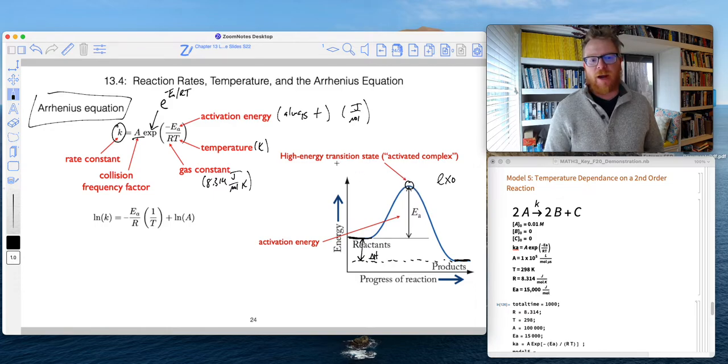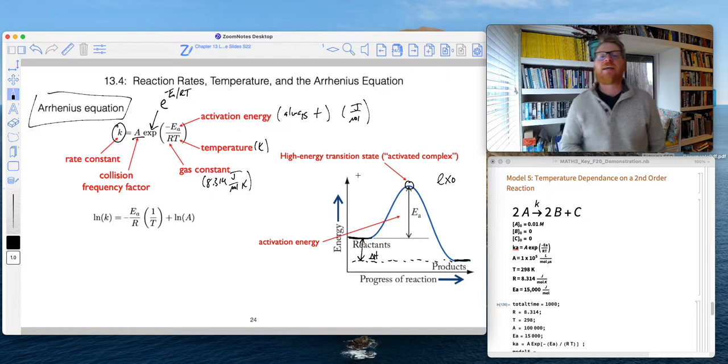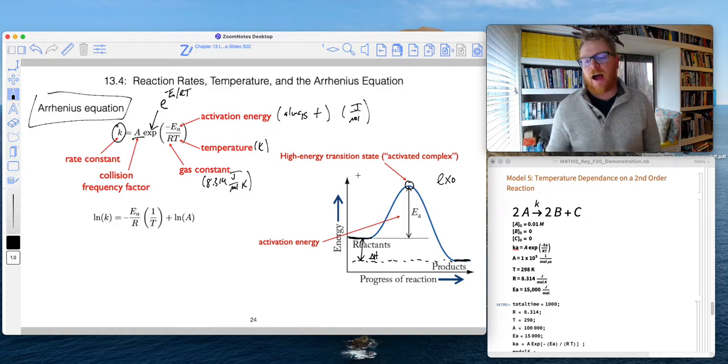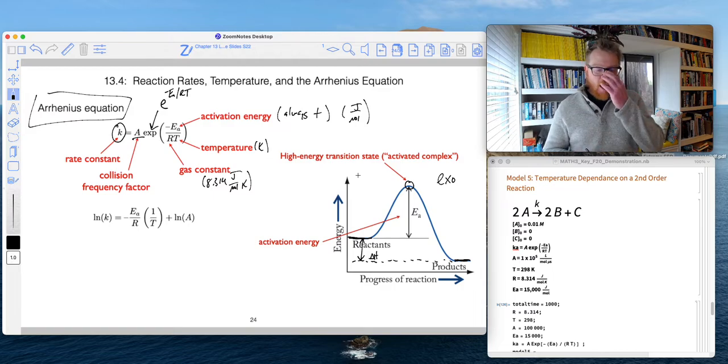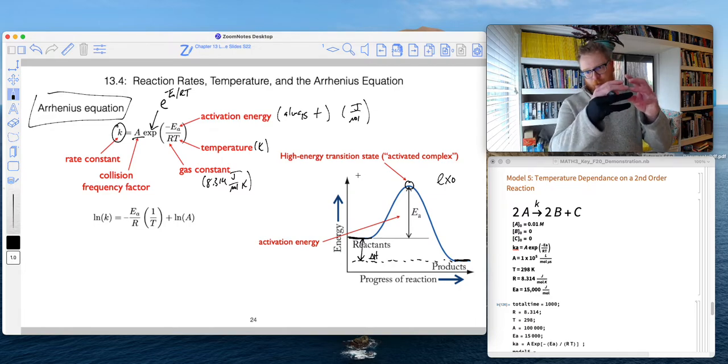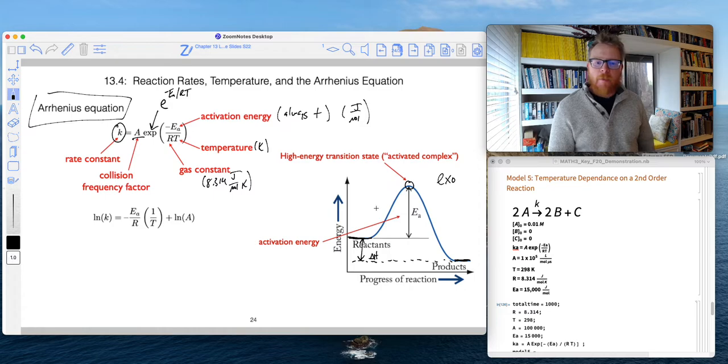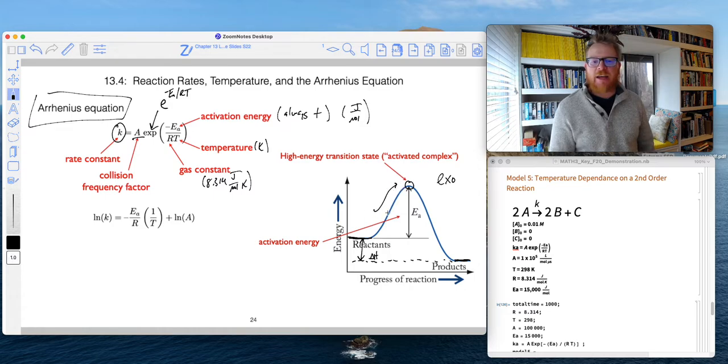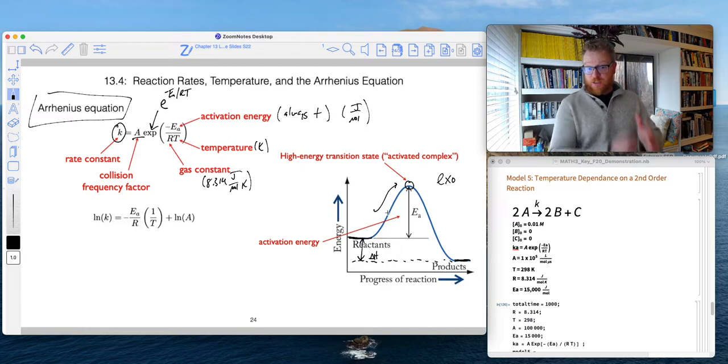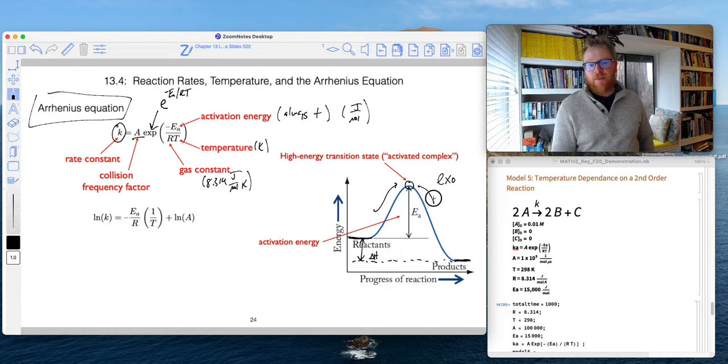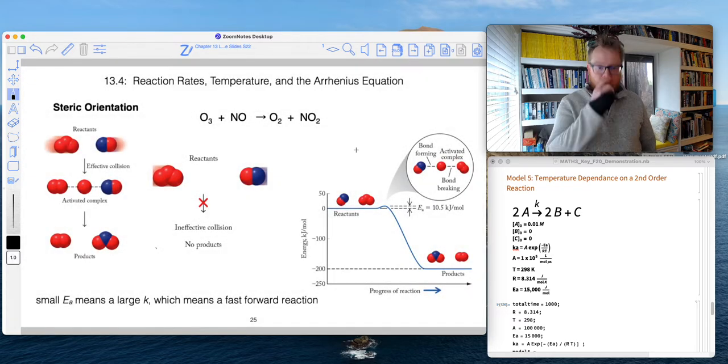And this point that I'm circling right here, that's what we call a high energy transition state or an activated complex. And that is some temporary, very weird looking intermediate where the reactant molecule and the product molecule are kind of half formed. They're in the development process. And so that's the high energy side. If they collide with enough energy to overcome that barrier, then it'll move on down through into products.